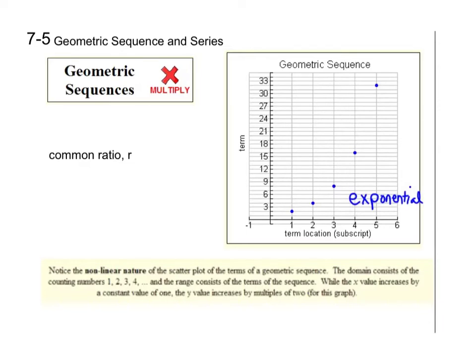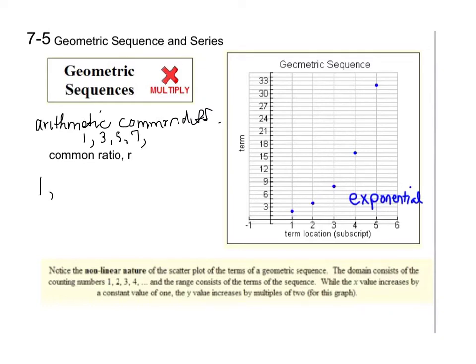We talked about arithmetic sequences and series and we said that arithmetic is when you have a common difference. So if it's arithmetic you would add 2 to each term, but in a geometric sequence we're going to multiply. So if r equals 2, then 2 times 1 is 2, then times 2, then times 2, on and on.